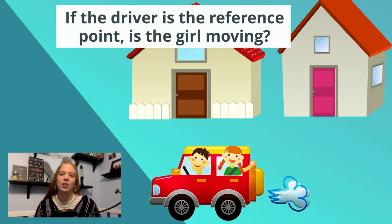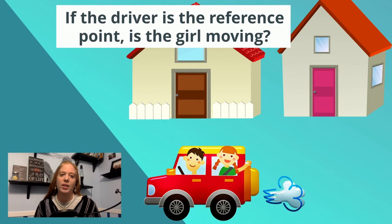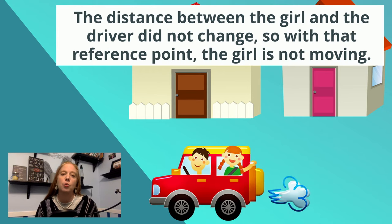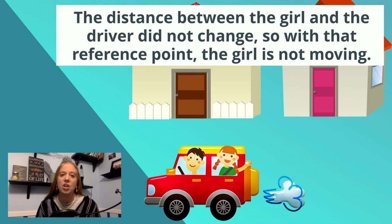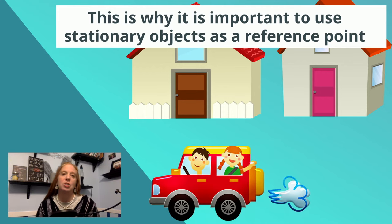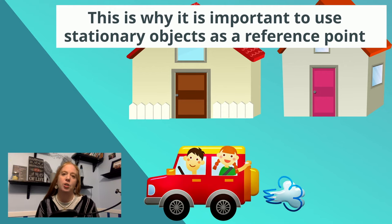If the driver is the reference point, is the girl moving? The distance between the girl and the driver did not change. So with that reference point, the girl is not moving. This is why it's important to use stationary objects as reference points.